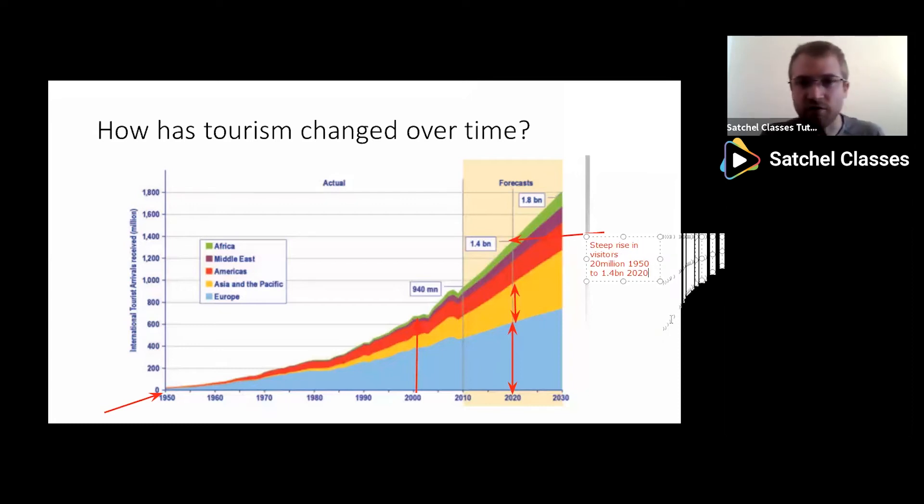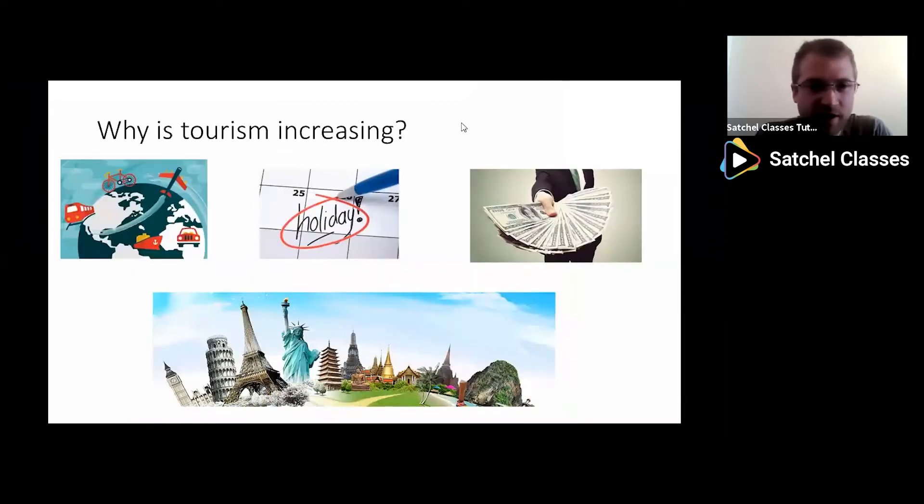So this growth has been driven by a few different factors. Trends are changing in our world and we can see it visually here. So we are one of the leading nations in terms of tourism. Let's try and find out why certain areas are, or why tourism has grown so much. You can think about these different pictures, but each one of those will represent a reason why tourism has grown. Why is it increasing at such a rapid rate? And this is basically the changes that our world has undergone.